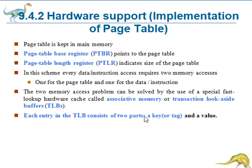Each entry in the TLB consists of two parts — a key or tag and a value. When the associative memory is presented with an item, it is compared with all keys simultaneously. If the item is found, the corresponding value field is determined. The search is fast, but the hardware is very expensive.